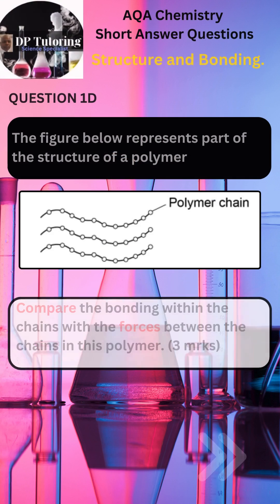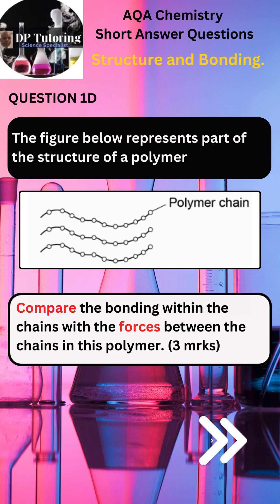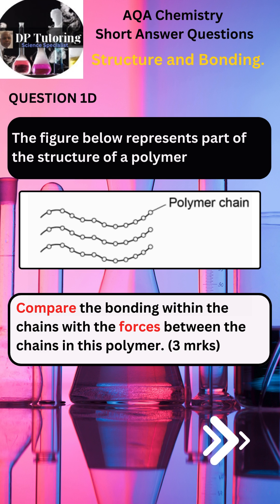The final part of the question provides a diagram of the structure of a polymer. AQA asks you to compare the bonding within the chains with the forces between the chains in this polymer. Two things to focus on: 1. bonding within the atoms of the polymer chain, and 2. bonding between the chains. This is a very important question that you will probably see again when discussing bonding in graphene layers or sheets.